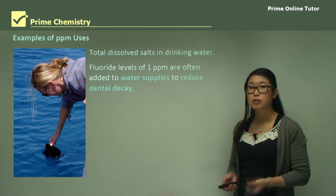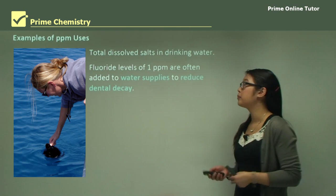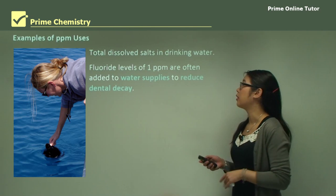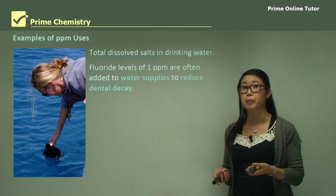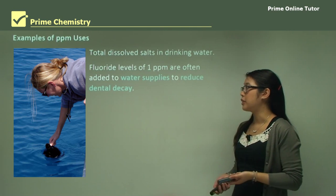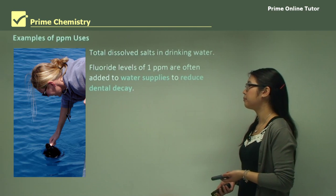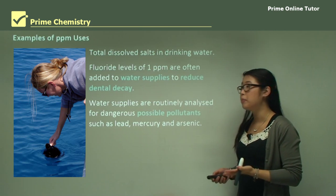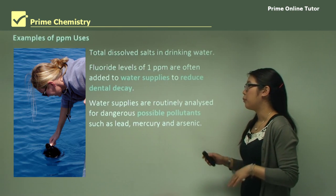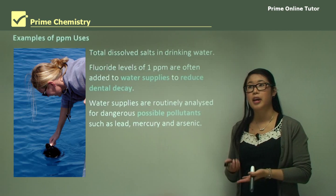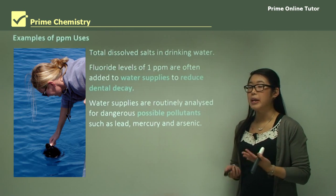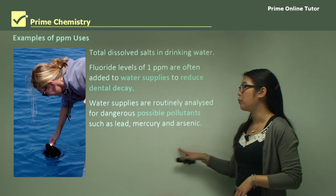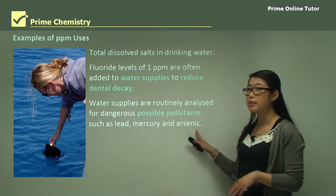Fluoride levels are very, very small — only about one part per million is added to drinking water to reduce dental decay. Water supplies are strictly analyzed for possible pollutants: heavy metals, bacteria, and in particular lead, mercury, and arsenic, because they are toxic to humans.